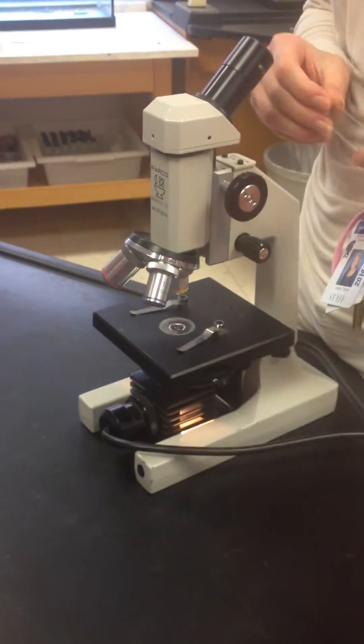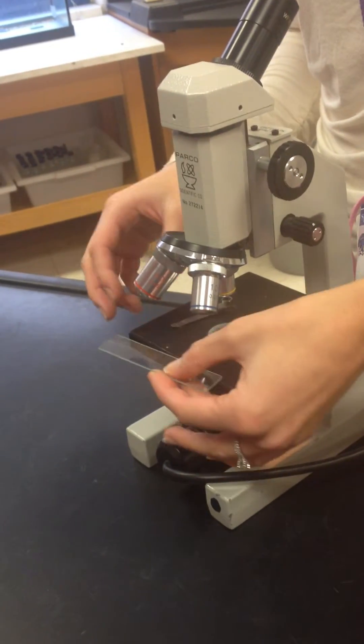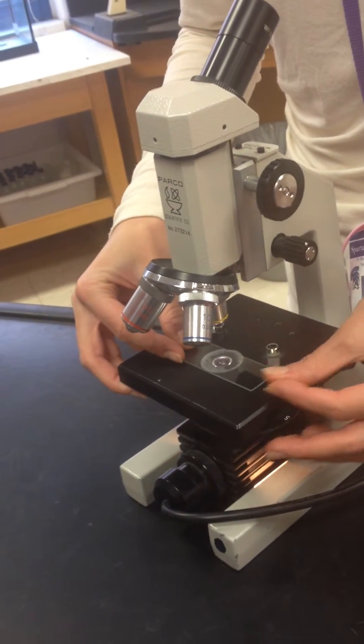So you're going to plug in your microscope, make sure that the light illuminates through the stage, and you're going to take your prepared slide or wet mount slide and place it on the stage and secure it with the stage clips.